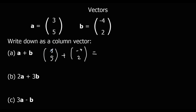If we went three to the right and then four to the left, three minus four is minus one, so in total we've got one to the left. And for the y direction, five plus two is seven — if we go five up and then two up, in total we've gone seven up. So a plus b equals the column vector minus one, seven.